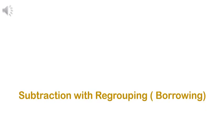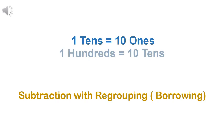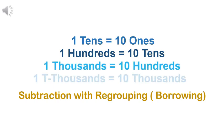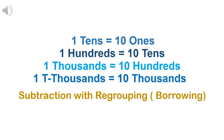Now let us understand subtraction with regrouping. Regrouping means borrowing. Remember: one ten equals ten ones, so if you borrow from the tens column it becomes ten ones. Similarly, if the tens column borrows from the hundreds column it becomes ten tens, and if the hundreds column borrows from the thousands column it becomes ten hundreds.